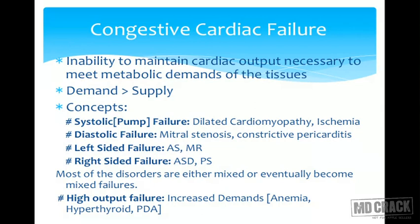If the heart is unable to dilate and accommodate blood, this is called diastolic failure. For example, in cases of mitral stenosis or pericardial effusion, the heart is unable to accommodate the blood. Left-sided failure gives rise to symptoms such as low BP or congestion in the lungs; conditions responsible include aortic stenosis and mitral valve disease. Right-sided failure gives rise to venous stasis, raised JVP and hepatomegaly. In reality, one type gives rise to another and ultimately we have combined or congestive cardiac failure.